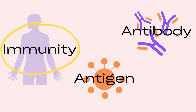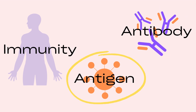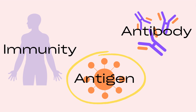The first term is immunity. Immunity is the ability of an organism to fight off an infection by the action of antibodies. Antibodies are proteins that our immune systems make to fight off unwanted diseases. And finally, an antigen is any substance that causes our immune systems to produce antibodies against it.